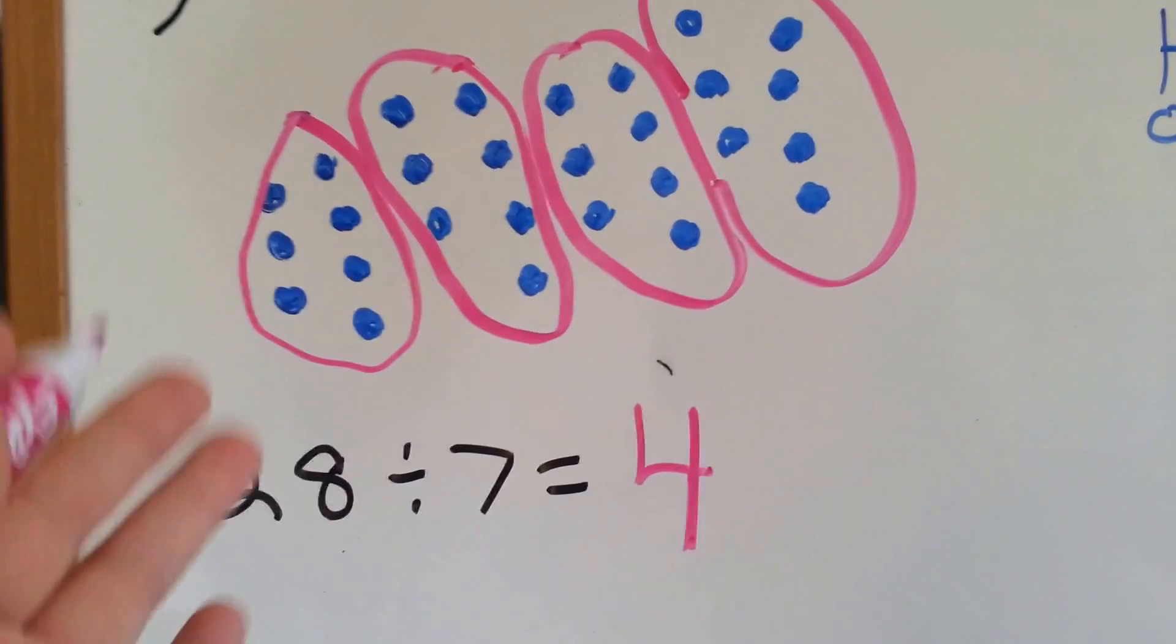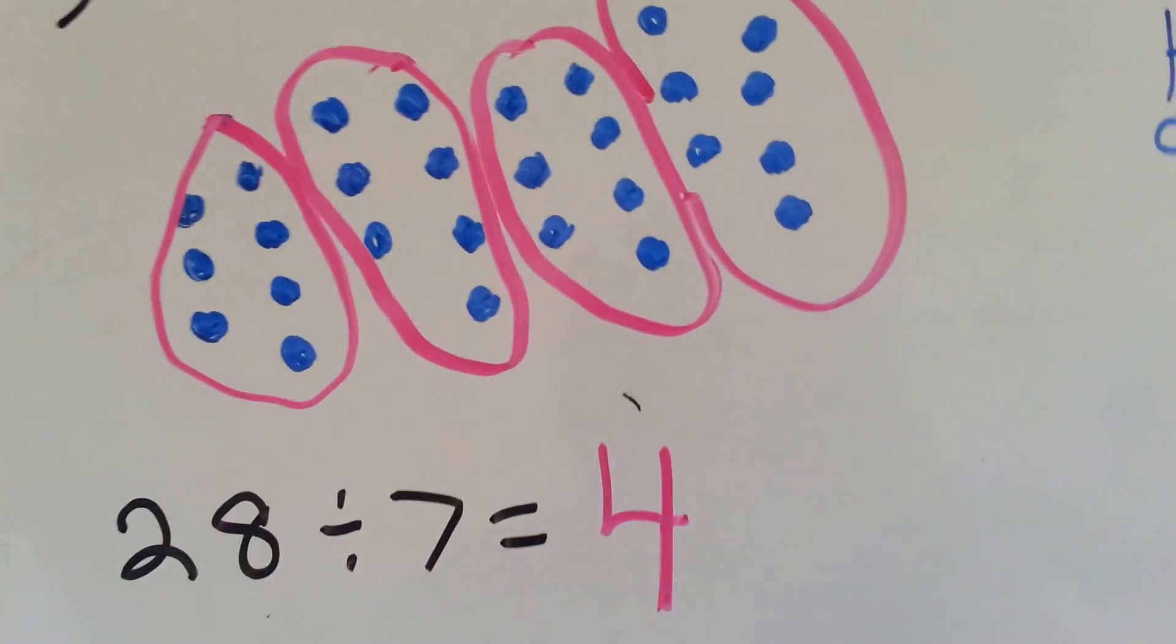but that would have been harder because we would have known how many groups to make, but we wouldn't have known how many to put in each group. That's what I meant. So, let's take a look at this next one.